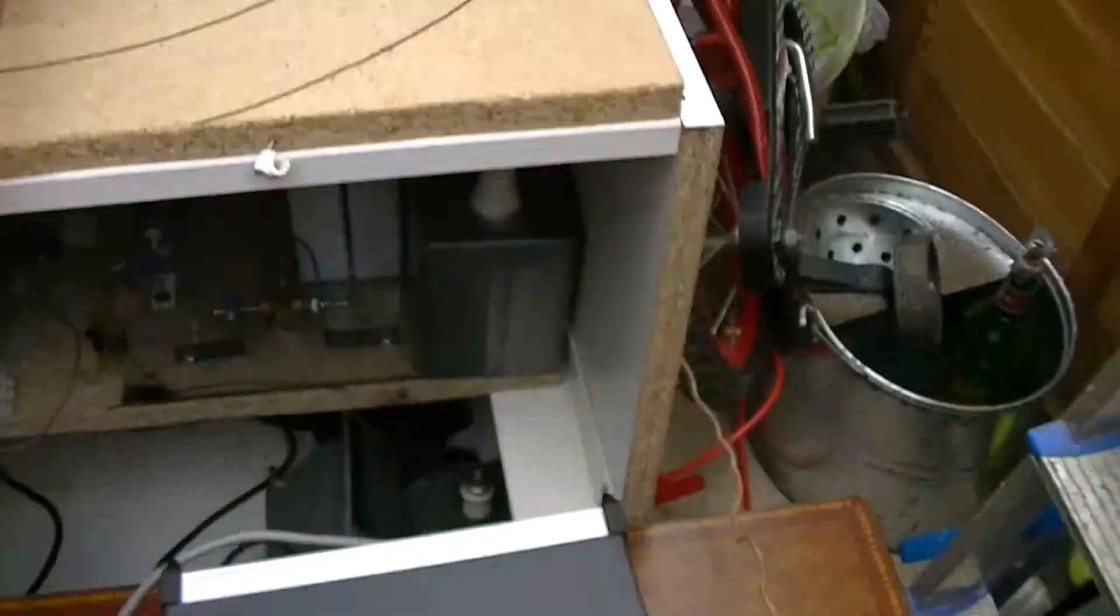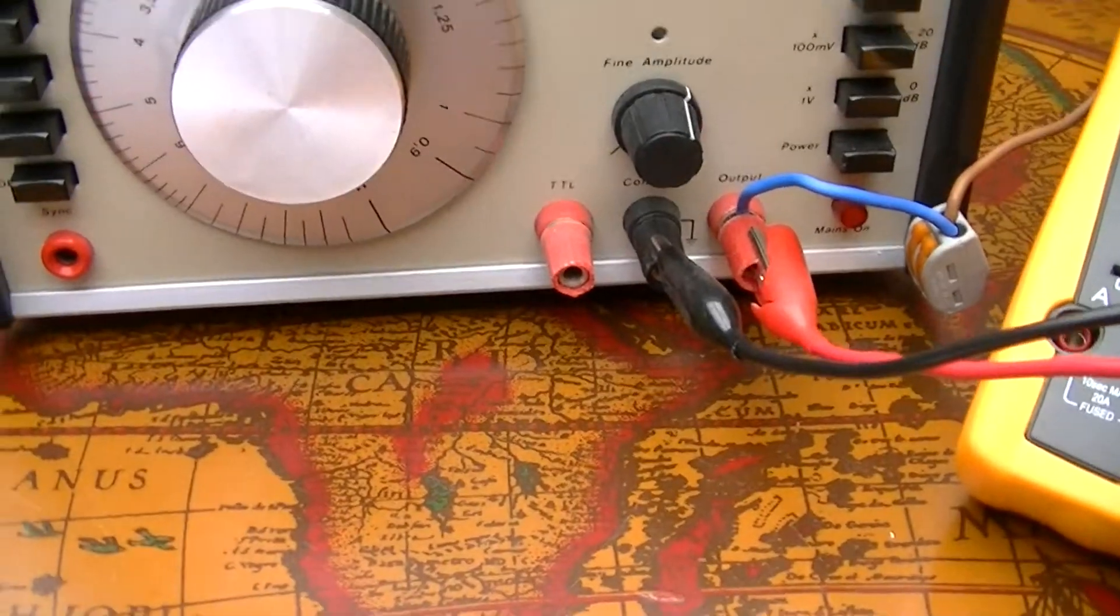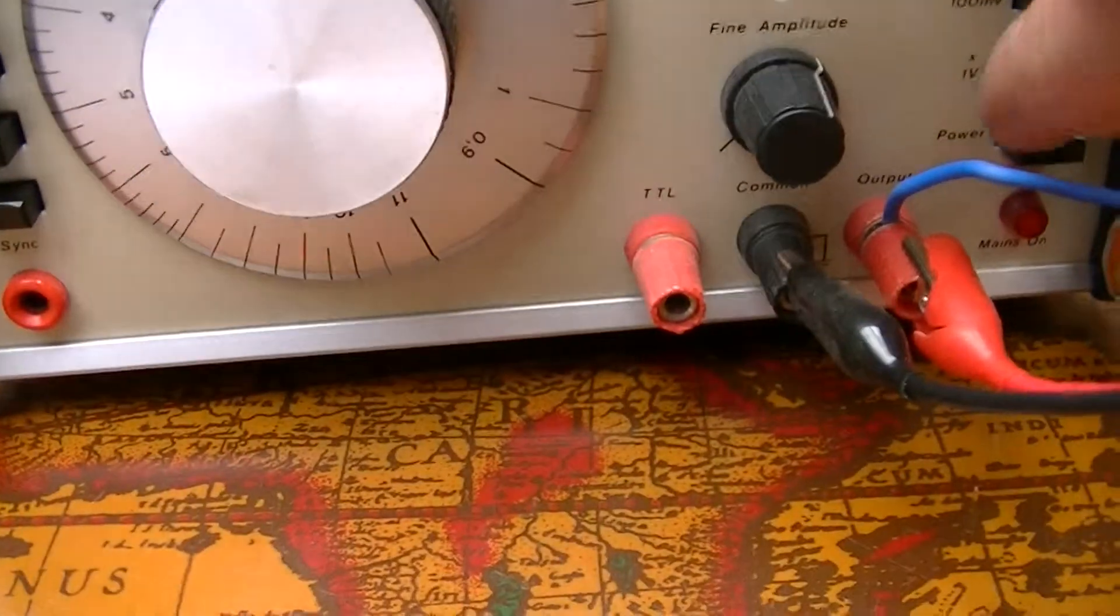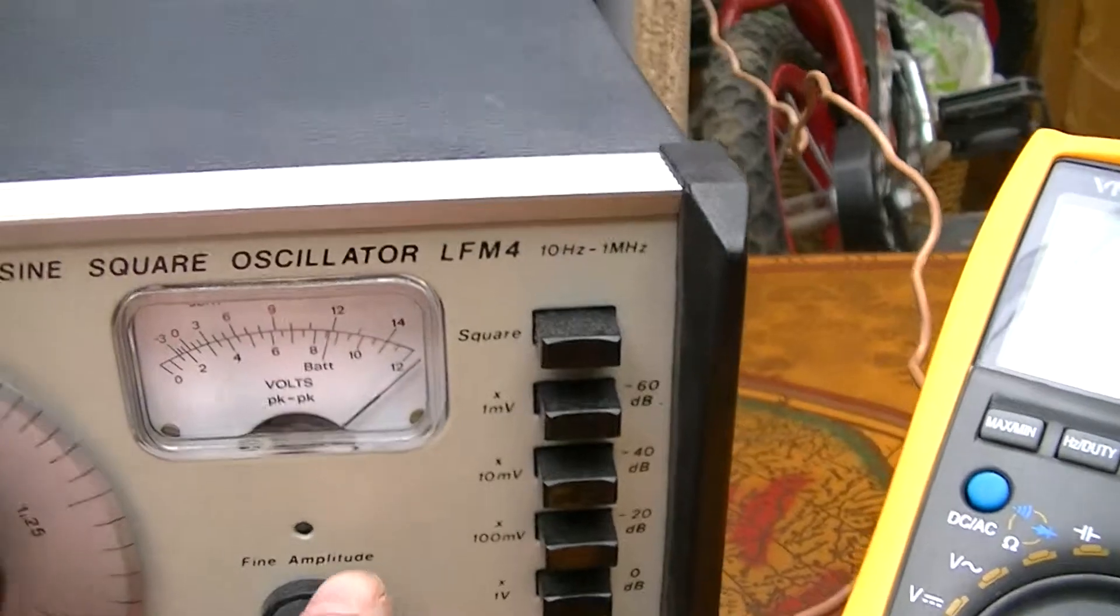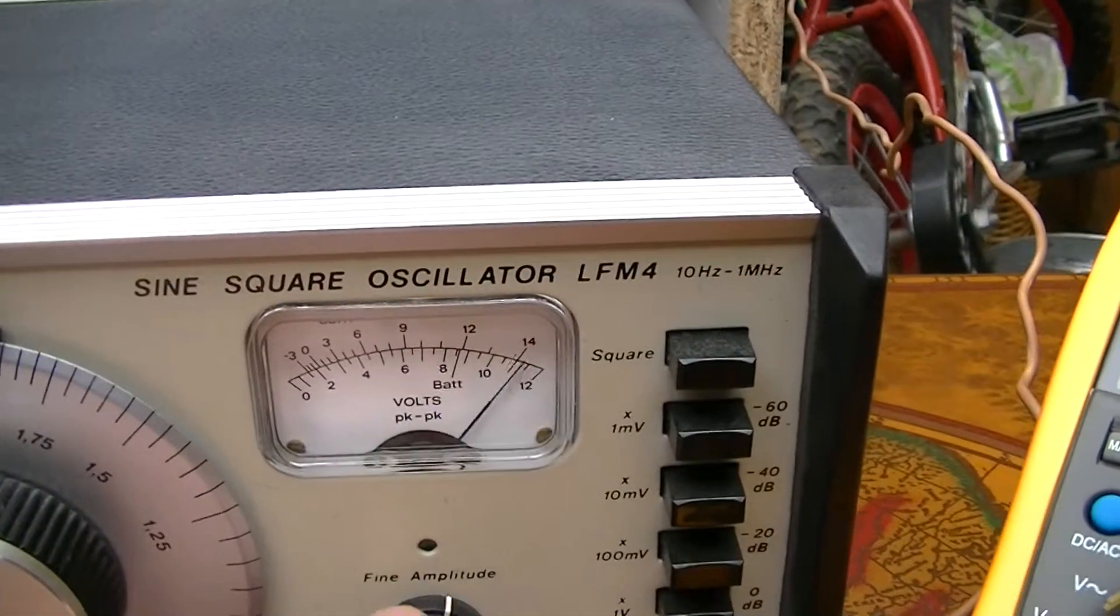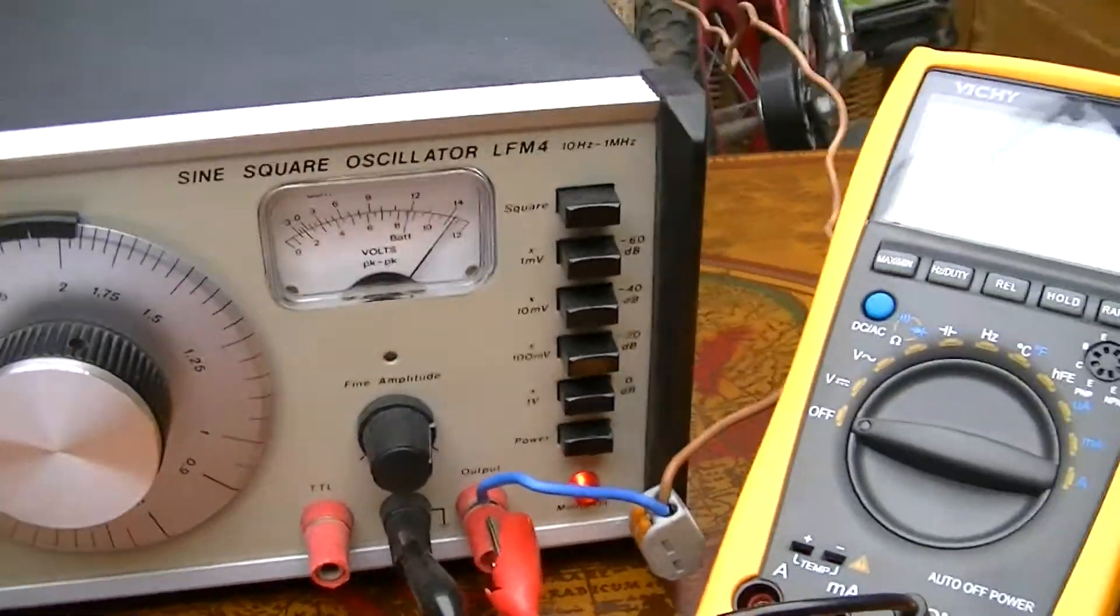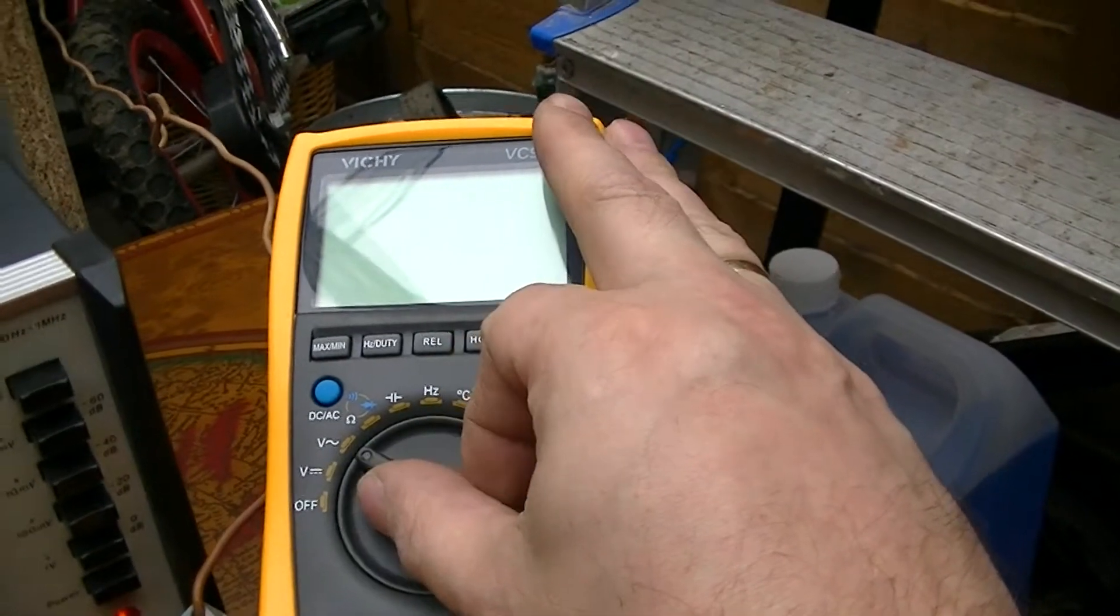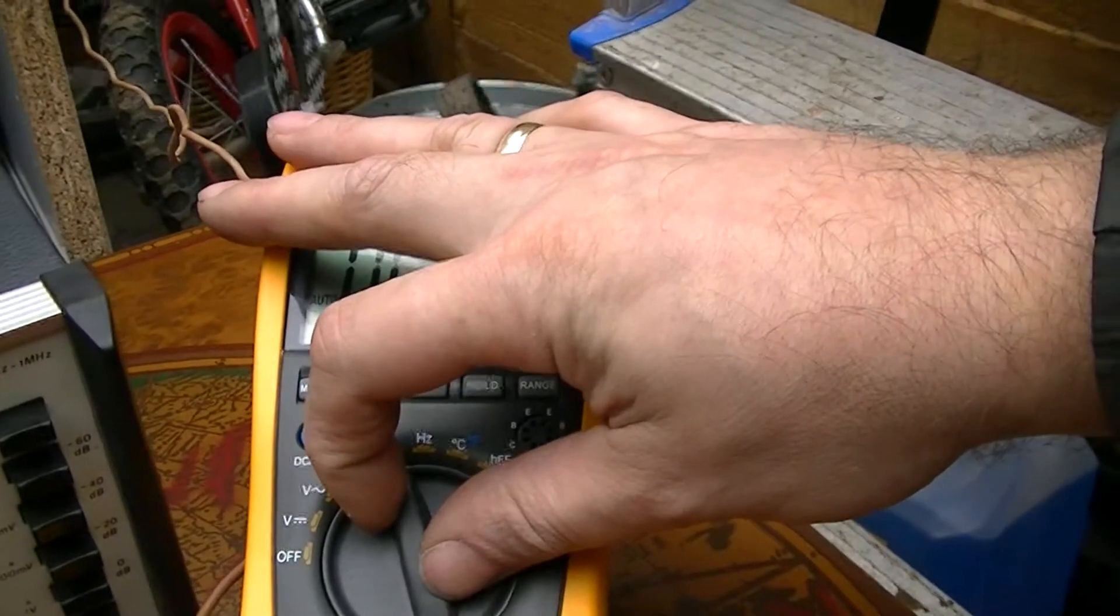I've got a signal generator which is set up for 100 kilohertz. I'm going to switch it on and put it to the maximum. And I have this voltmeter so I can check.